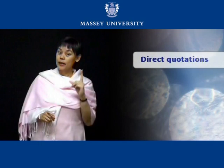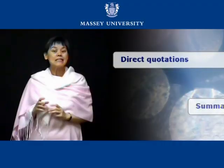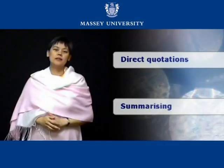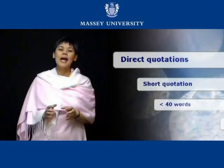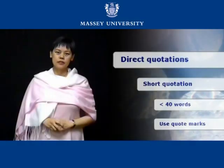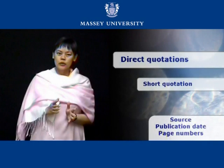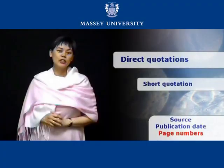Let's have a look at in-text referencing. This takes two forms: direct quotations, when you use the author's exact words, or summarizing, when you put someone else's ideas into your own words. There are two types of direct quotations: short and long. Short quotations are quotations of 40 words or less, and use quotation marks to indicate which are the exact words of the author. Immediately after the second quotation mark, indicate the source, date of publication, and page number or numbers where the information can be found.